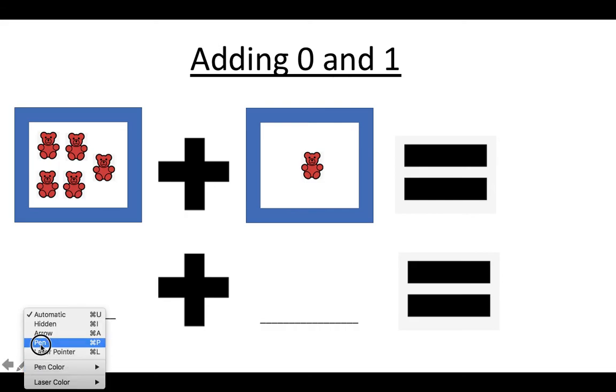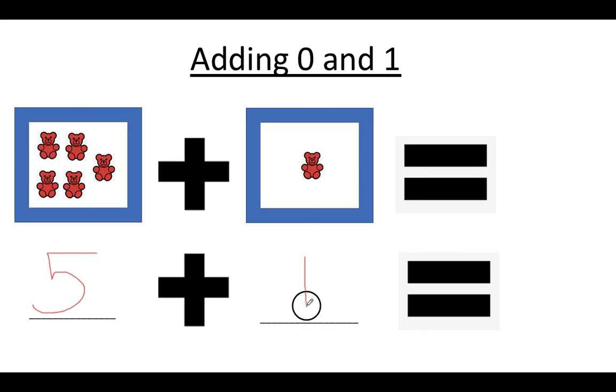This time we have one, two, three, four, five bears in the first box. We're adding one more bear in the next box. We're going to put the big number in our head and then count on one more number. What number comes next after five? Five, six.